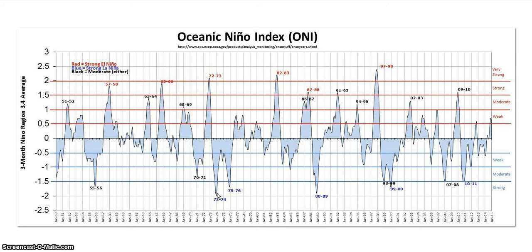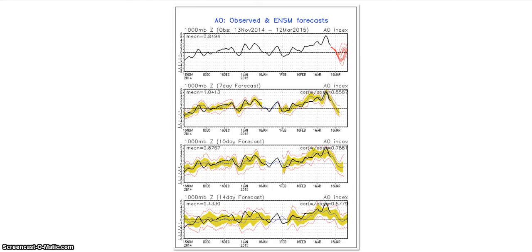With these weaker El Niños, they sometimes pop back down into La Niña with a little bit of a rebound. Usually with El Niño it's just a one-year thing, or it comes back like it did in the 90s and 80s, but a lot of these are just straight spikes up. Maybe we could see something similar to the late 70s, early 80s pattern — we'll just have to see.